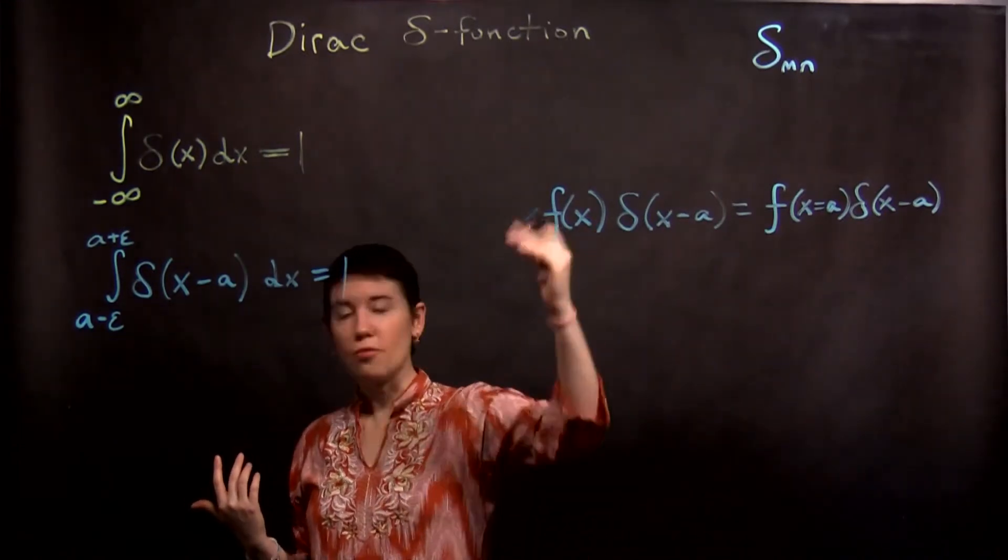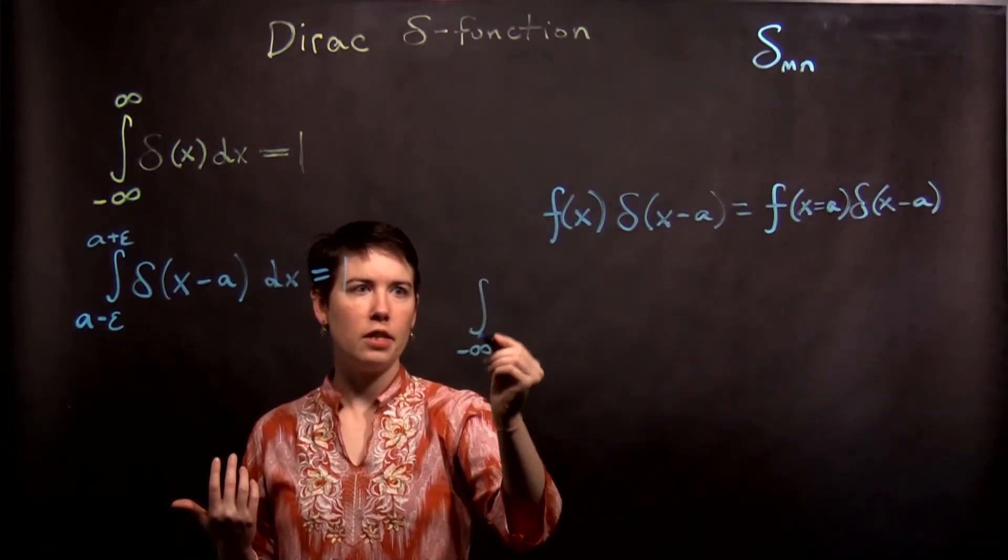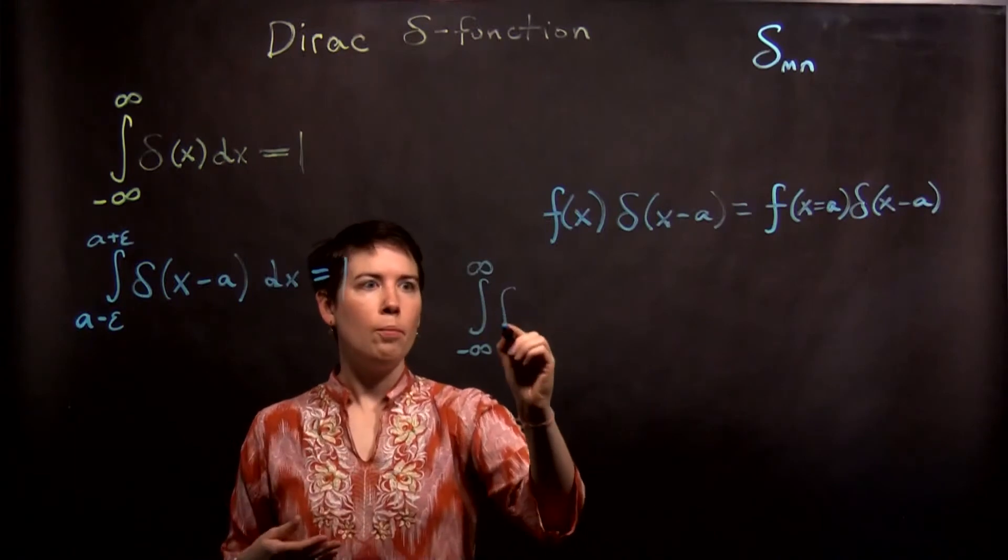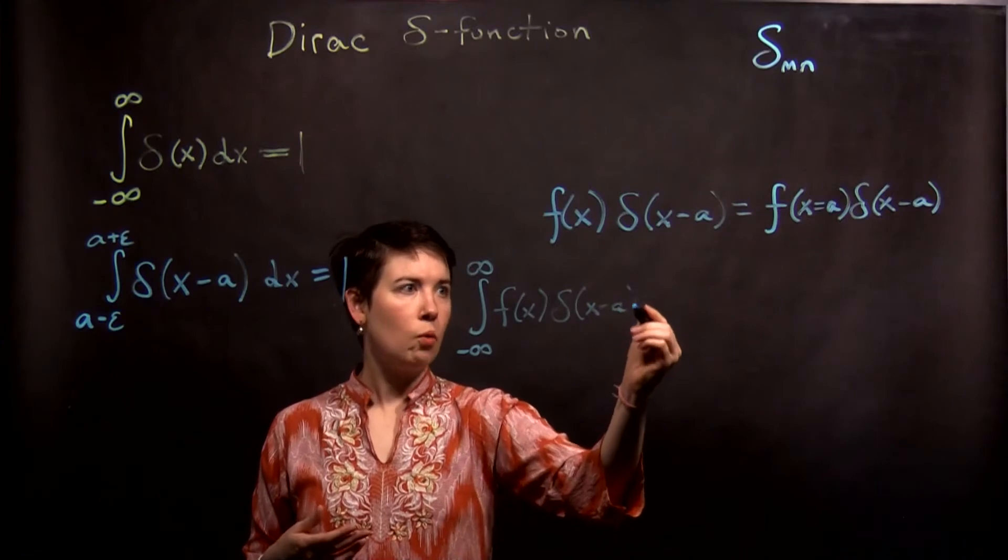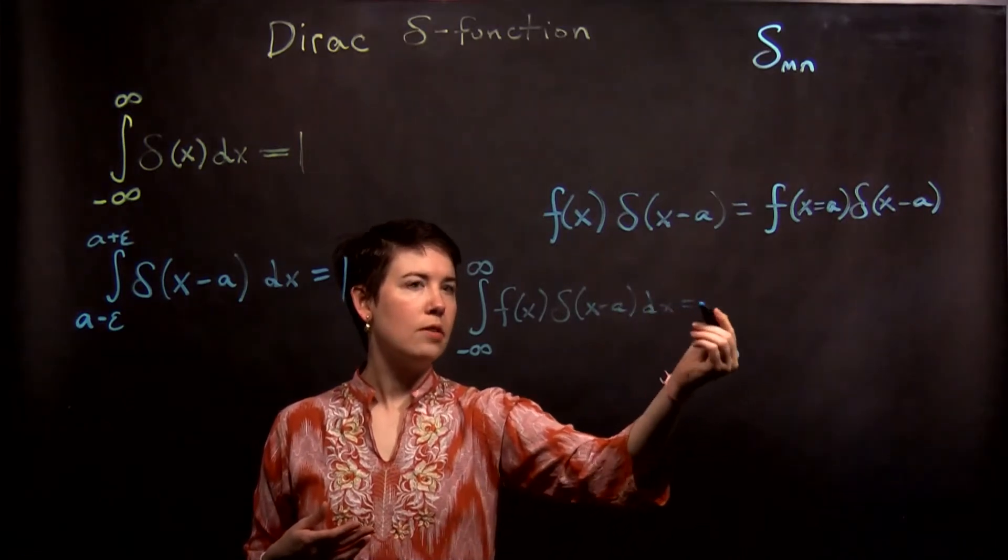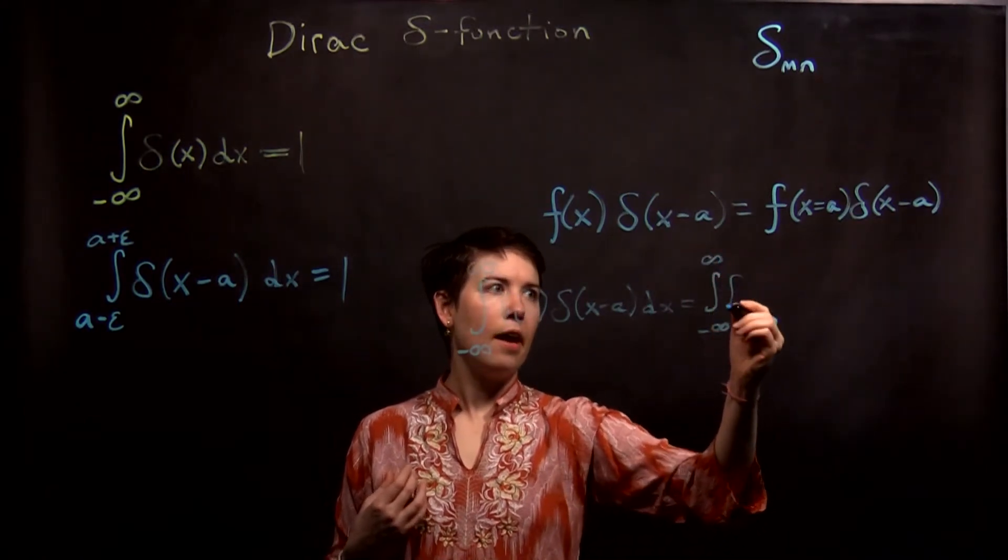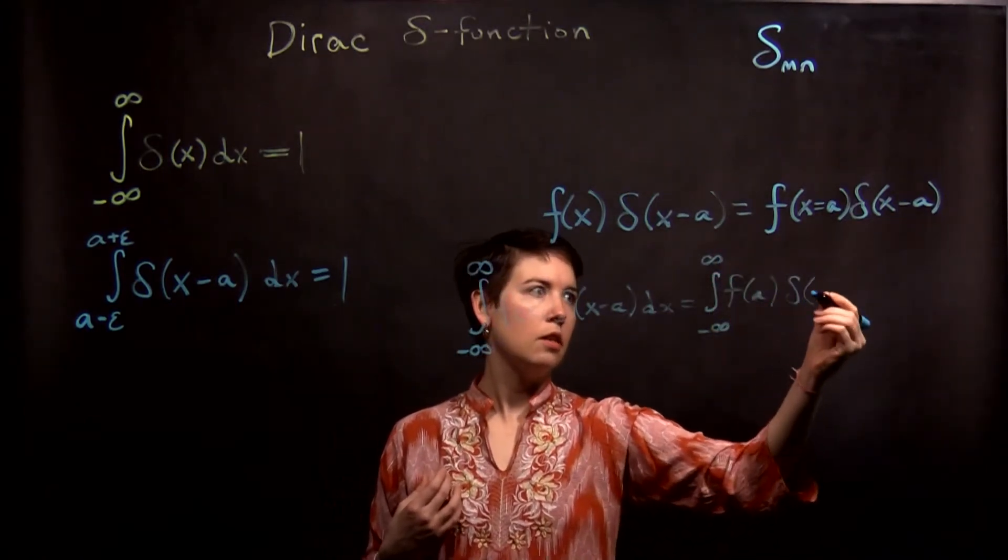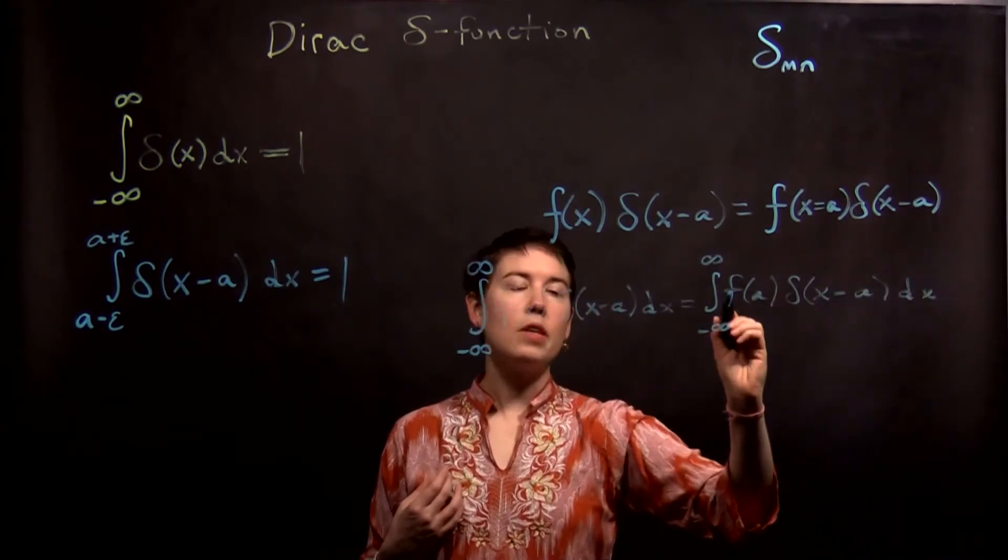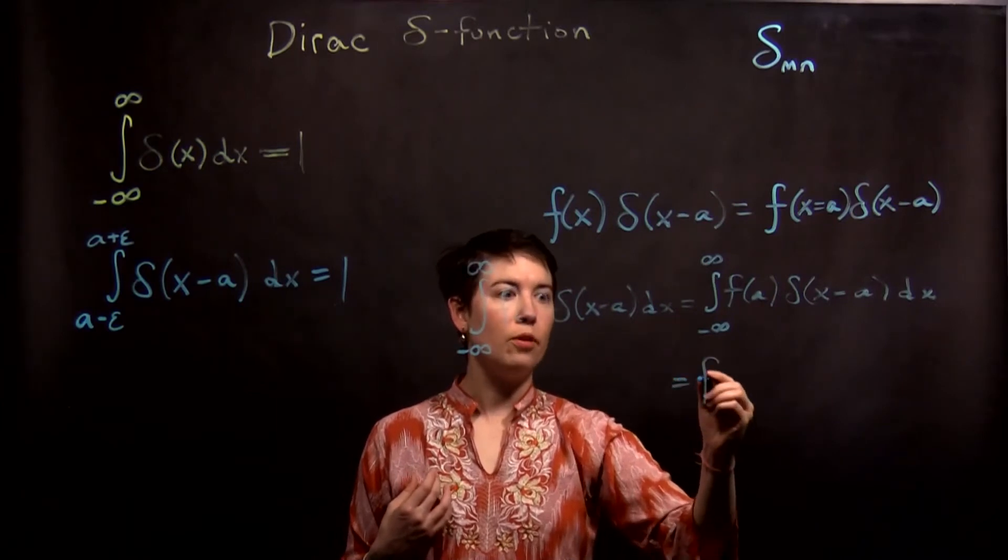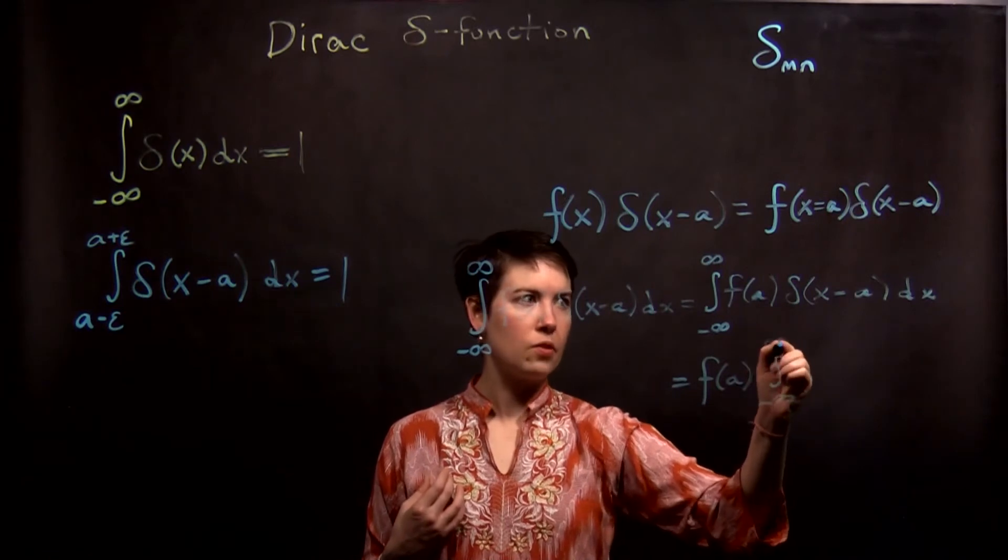So if we then wanted to do that integral, again negative infinity to infinity, or it could be limited, but we have f of x, and then we have that delta function. So what we get to say now is that this is the same thing as saying f of a delta of x minus a. And notice that this is now a scalar. This is a constant value, so I can pull that outside of my integral, and I'm left with this integral.